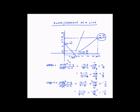Let us note down some observations for this line. This line is moving from left to right but in a downward direction. The x-coordinate is increasing while the y-coordinate is decreasing. So when we compute y divided by x, one is increasing and the other is decreasing — one is negative and the other is positive. For this type of line, the slope is negative.